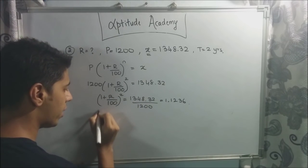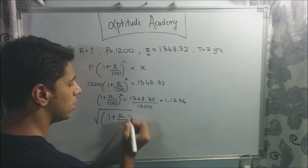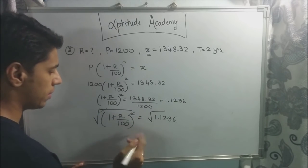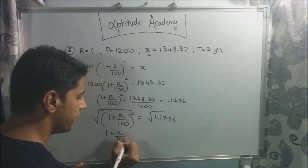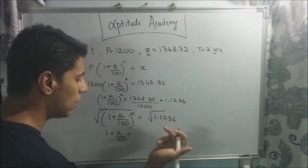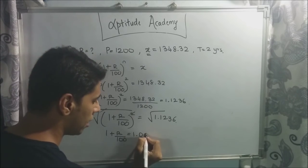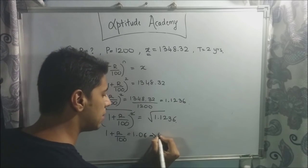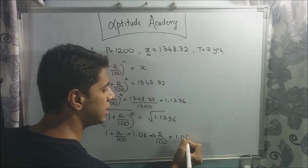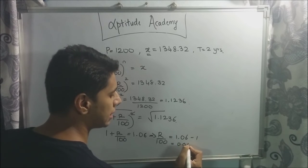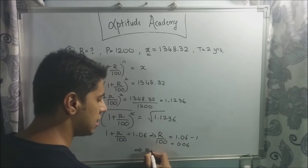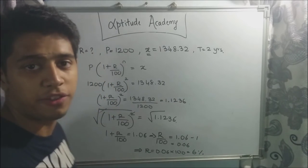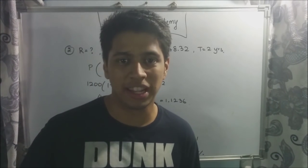We have a square on the left, so take square roots of both sides: (1 + R/100) = √1.1236 = 1.06. Therefore R/100 = 1.06 − 1 = 0.06, which gives R = 6%. That is the required rate of interest.